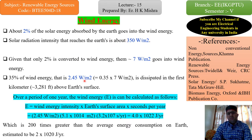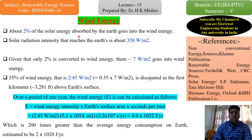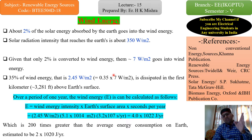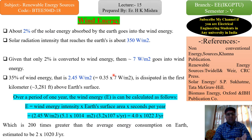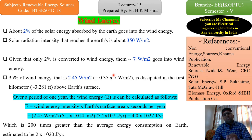So coming to our topic — Wind Energy. I will give you some basic information in this lecture, and then I will tell you about the latest scope and updates regarding wind energy globally. About two percent of the solar energy absorbed by the Earth goes into wind energy. When solar radiations — ultraviolet, visible, and other beam radiations — reach the Earth, the Earth absorbs about two percent of that and releases it continuously 24 hours.